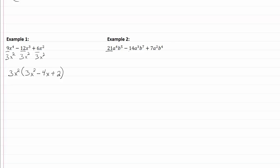Now let's take a look at our second example. Again I want to take a look at my numbers first. Twenty one, fourteen, and seven all have a common factor of seven. And it looks like they all have a's, and my lowest exponent is going to be two, so we're going to be dividing by seven a squared.